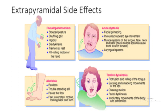Acute dystonia includes facial grimacing, involuntary upward eye movement, and muscle spasms of the tongue, face, neck, back, and laryngeal spasms. Akathisia is characterized by restlessness, trouble standing still, pacing the floor, and feet in constant motion rocking back and forth.